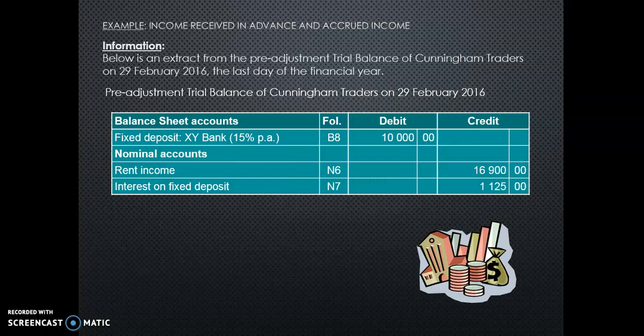We are going to look at an example quickly. Here is the pre-adjustment trial balance on the last day of the year. You are going to do the adjustments now. You have a fixed deposit at XY Bank — always remember you can have a fixed deposit at more than one bank, so you must specify: XY Bank, or F&B Bank, or Capitech, whatever the case may be. Then rental income for the year, and interest on fixed deposit for the year. We must adjust these accounts as per the GAAP principles, because you must be prudent and have up-to-date, accurate information in the financial world.